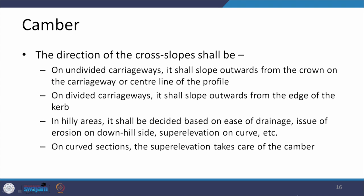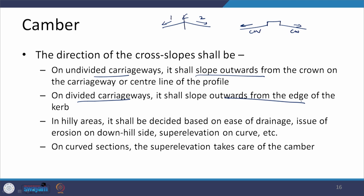For a two-lane undivided system, the slope is provided away from the center line toward both edges. For a divided system, drainage is away from the median toward the edges. In hilly areas, the direction of the cross slope shall be decided based on ease of drainage, risk of erosion on the downhill side, superelevation, and horizontal curvature.